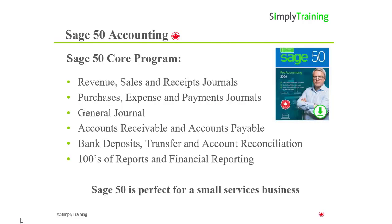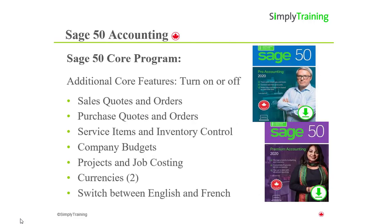Moving back to the Sage 50 Canadian program, let's go over all the core features in the Sage 50 family. The core features are what all businesses require in an accounting program: to track revenue and expenses, maintenance of accounts receivable and accounts payable, to manage various banking transactions and bank account balances, credit card transactions, and to view financial reports to show if the business is turning a profit or running a loss. In addition to the core program, there are additional features that can be turned on or off depending on what the business needs are, already in the program with no additional fees.